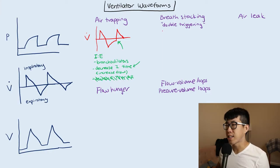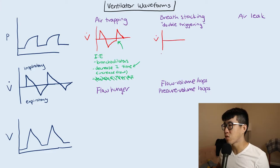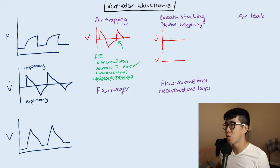Next, let's move on to breath stacking or double triggering. I'm going to draw the flow curve and also the volume curve. What you're going to see is just a kind of normal flow volume curve here, and then all of a sudden the patient takes a breath.